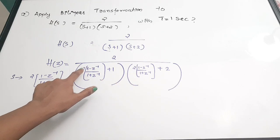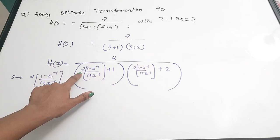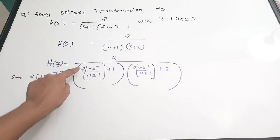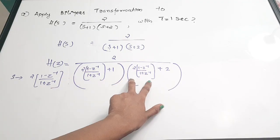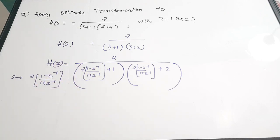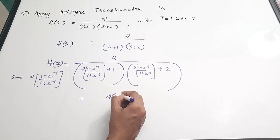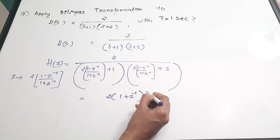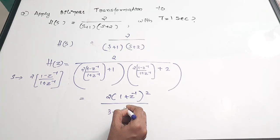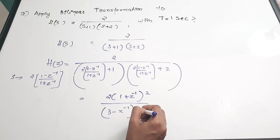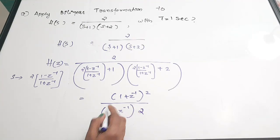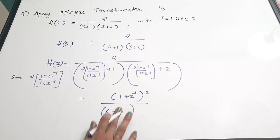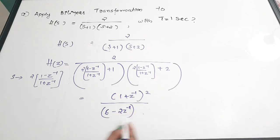We have substituted s with 2(1 − z⁻¹)/(1 + z⁻¹) in both terms — since T = 1, we write 2 × (1 − z⁻¹)/(1 + z⁻¹). If T were some other value, you would use 2/T. Now we need to simplify by cross-multiplying. After cross-multiplying and simplifying, you get: 2 × (1 + z⁻¹)² / [(3 − z⁻¹) × 4].